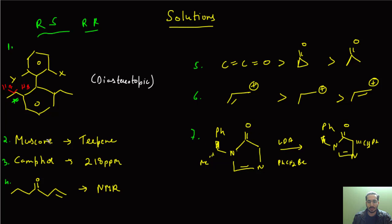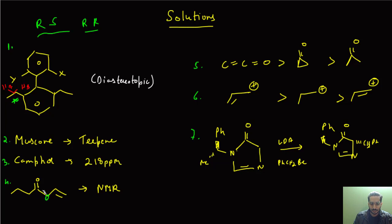There were two questions from natural products. One was based on muscon — it's a terpene used for the musk smell in deodorants. Then there was a question based on carbon NMR asking which natural product shows a value at 218 ppm — that was camphor. Then there was a four-mark question on NMR spectroscopy. The correct structure includes an oxygen that I initially missed. This is the correct structure for the NMR spectroscopy question, and I believe this was option A.